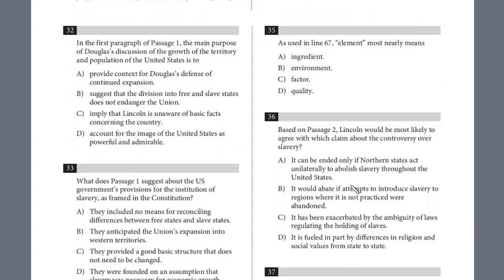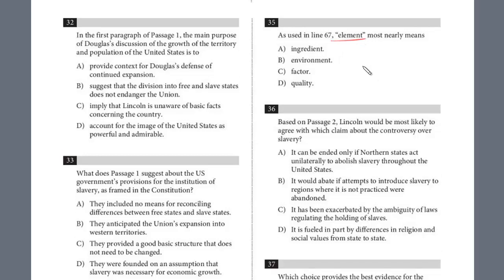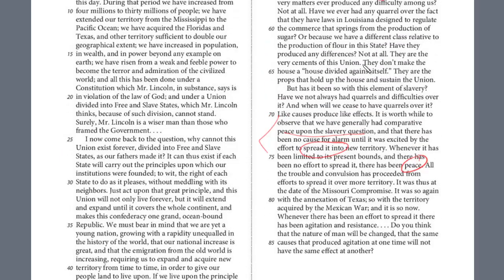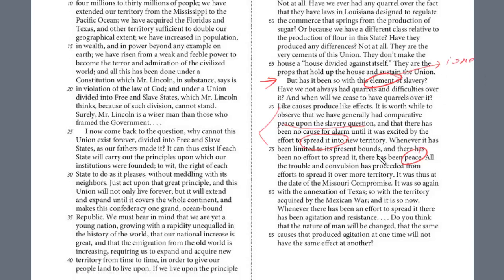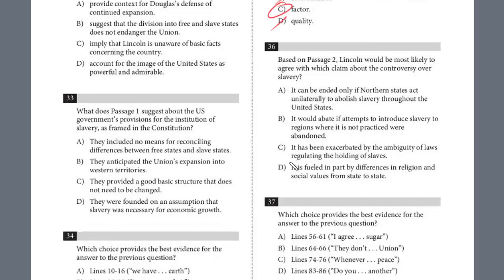Now we're going to answer only passage two questions. The first question is just a word in context: what does 'element' mean in line 67? The end of the previous paragraph reads 'they are props that hold up the house and sustain the union.' Then: 'But has it been so with this element of slavery? Have we not always had quarrels and difficulties over it?' So 'element' here is really like this issue or factor of slavery. Certainly not 'ingredient' or 'environment' — it's 'factor.' The issue, this factor of slavery.